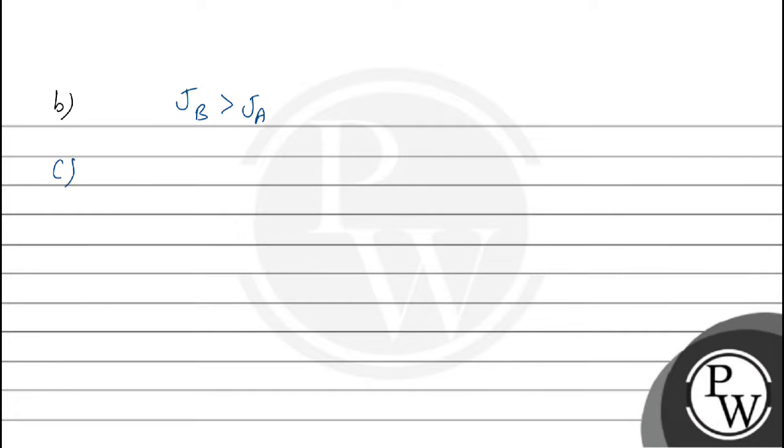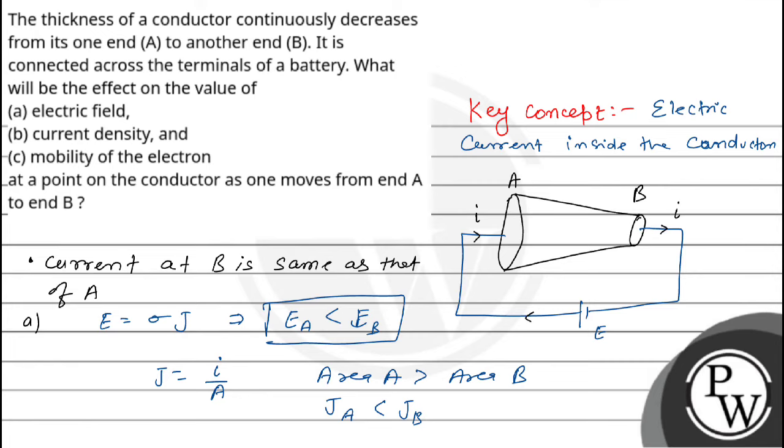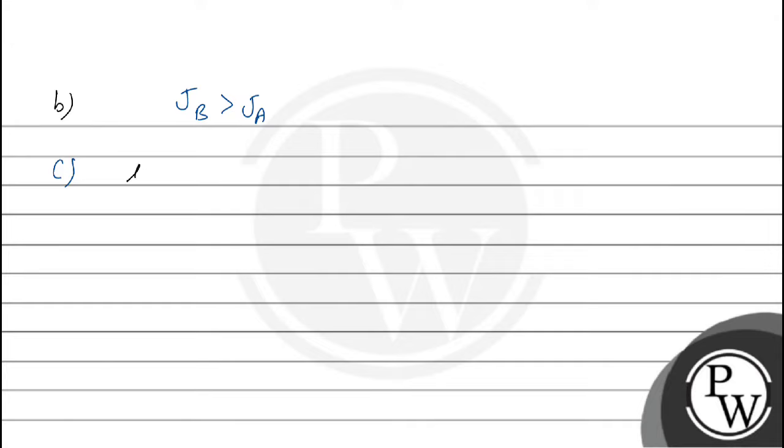Now C, that is mobility of electron. We know mobility, what is mobility? Mobility of electron, that is mu, we write it mu equal to Q by M into tau. Q by M into tau, where tau is relaxation time. And the relaxation time depends on the temperature. So we consider the conductor A and B, both are at same temperature because the surrounding temperature is constant. So our relaxation time for the conductor is the same.